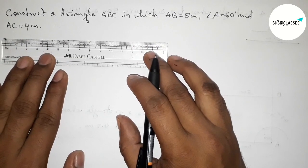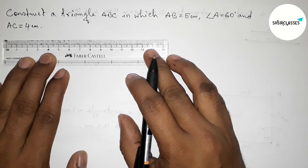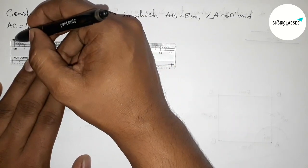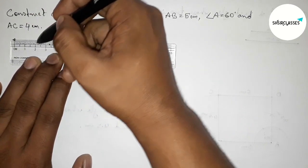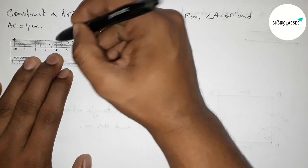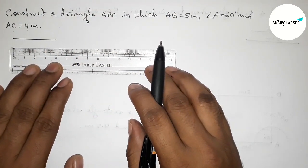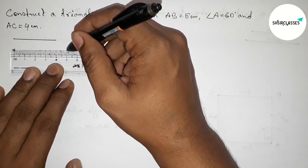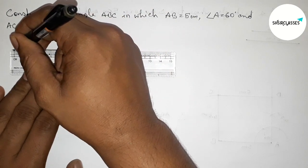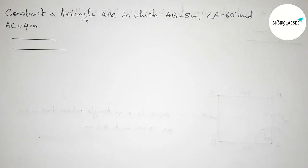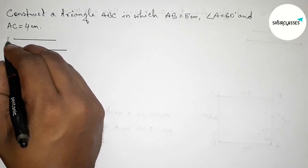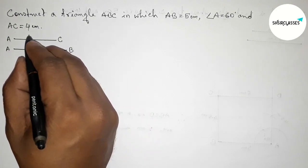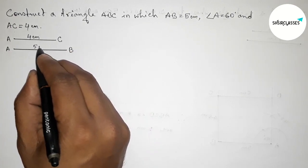First of all, let us draw the given two sides. Drawing here AC equals to 4 centimeter — this is the 4 centimeter line. And drawing another AB equals to 5 centimeter — this is the 5 centimeter line segment.